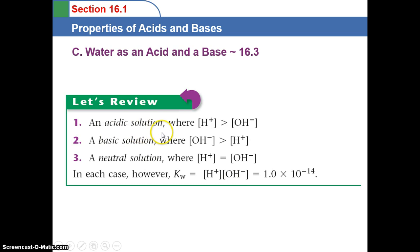An acidic solution is one where the hydrogen ion is greater than the hydroxide ion. A basic solution is where the hydroxide ion is greater in concentration than the hydrogen ion. And a neutral solution is when they are in equal amounts or equal concentrations. In each case, we can always take the hydrogen ion concentration times the hydroxide ion concentration, and we should always come up with 1 times 10 to the negative 14th.